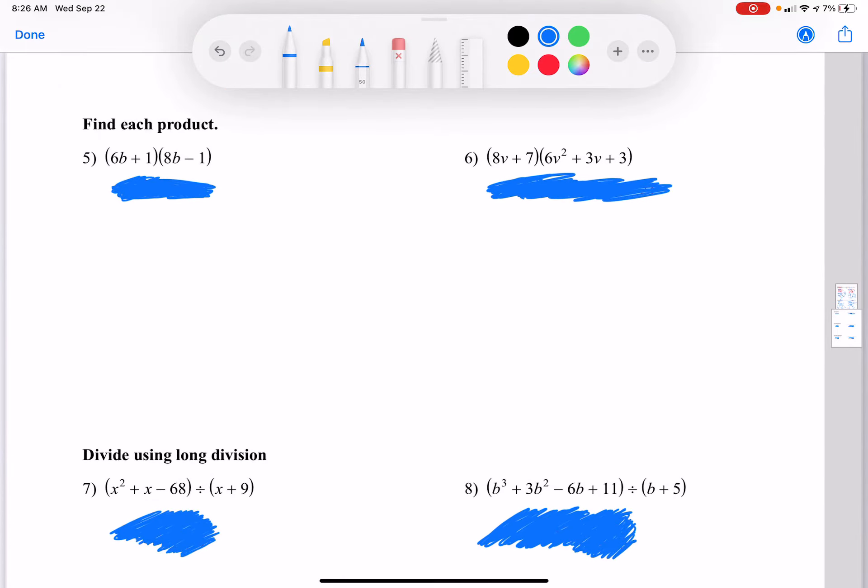Find each product. So now we get to multiply. Product means multiply. And you can tell because the parentheses are touching. So first, 6 times 8 is 48 b squared. Outer, negative 1 times 6b is negative 6b. Inner, make sure you multiply all of them, plus 8b. And last, this is the one people forget to multiply, negative 1 times 1 is negative 1. Combine these two and you're done, get 2b.